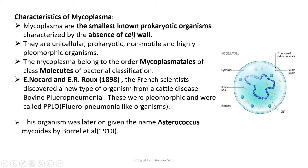Mycoplasma are unicellular, prokaryotic, non-motile, and highly pleomorphic organisms. We will learn more about why they are called pleomorphic. They belong to the order Mycoplasmatales, class Mollicutes, in bacterial classification.